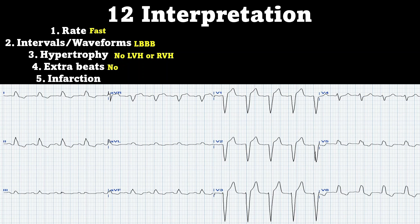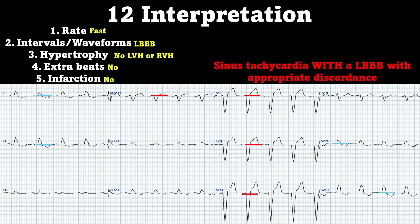And finally, infarction. You are going to notice that there is some ST depression and some ST elevation everywhere, and you're going to be like — isn't that going to be infarction? Well, no. This is something called appropriate discordance, which refers to the fact that abnormal depolarization should be followed by abnormal repolarization. This is completely normal for a left bundle branch block.